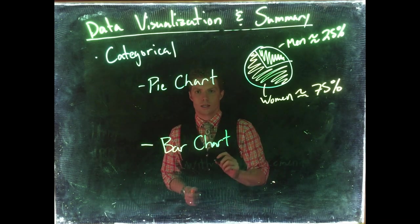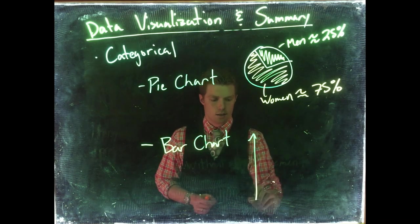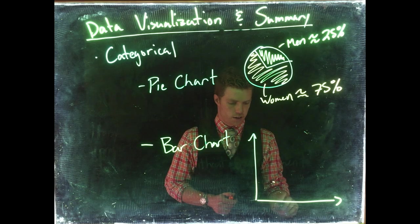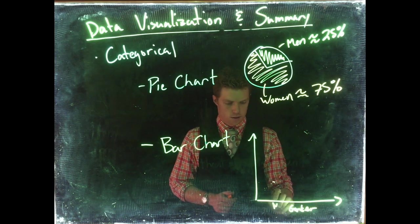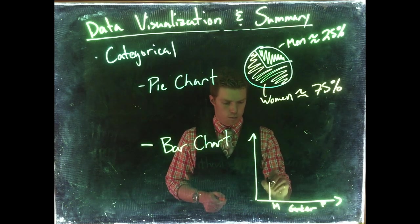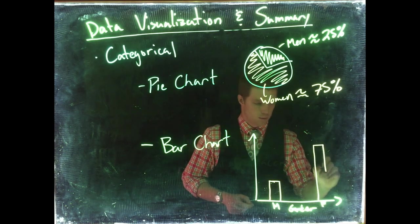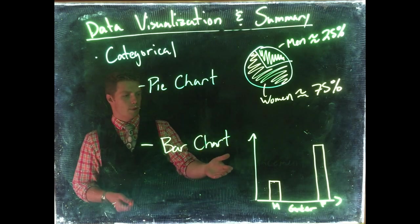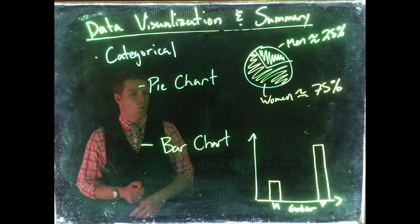The nice thing about bar charts is we can either use frequency or percentage on the y-axis. So here we've got our axes, we put gender here, we have male, we have female, and we could do just a simple bar going up and bar going up. So we see that the men are about at 25%, women are at about 75%.